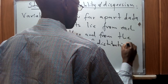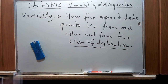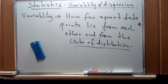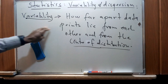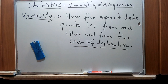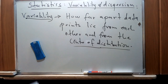In actual sense this relates to the mean, but from the definition we are going to use a graphical representation in order to illustrate what the term variability means. In essence, variability is how far apart data points lie from each other and from the center of distribution.